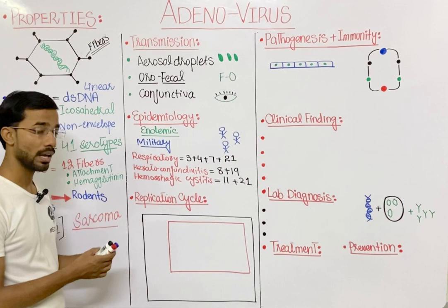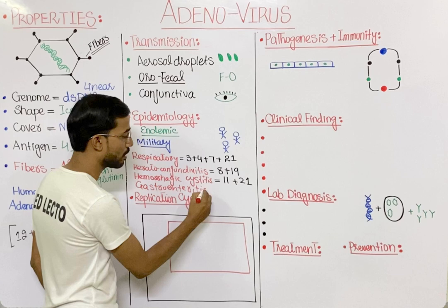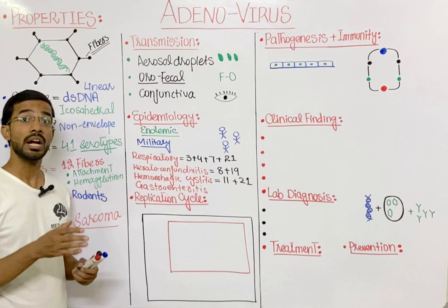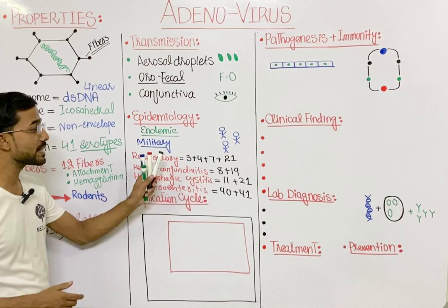The last disease is gastroenteritis, specifically infantile gastroenteritis occurring in children less than two years old. This is caused by serotypes 40 and 41 of the adenovirus.